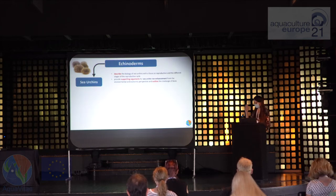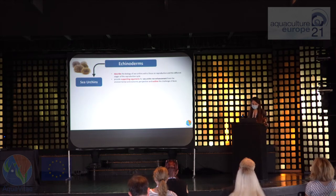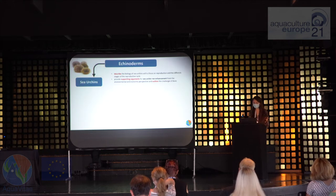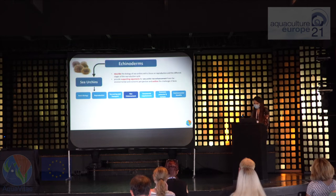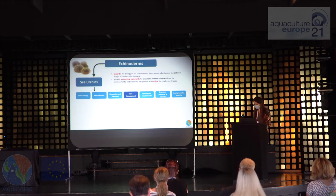For the sea urchin topic, here are two example learning outcomes: students will be able to describe the biology of the sea urchin with a focus on reproduction and the different stages of the reproductive cycle, and provide supporting arguments for sea urchin roe enhancement from the environmental and economic perspective and outline the challenges it faces. The sea urchin topic has seven different subtopics, all related to sea urchin roe enhancement.